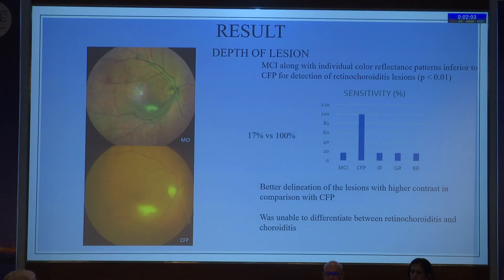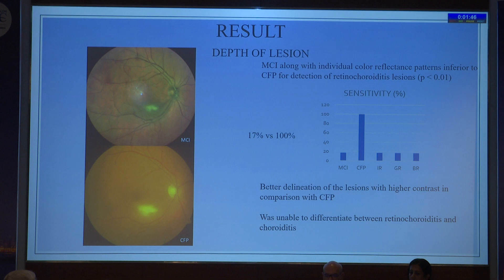With regard to depth of lesion, for identification of retinochoroiditis, multicolor with a sensitivity of 17% was inferior to color fundus photography with a sensitivity of 100%. As seen in the multi-color image on top, the active retinochoroiditis lesion appears green in color with higher contrast in comparison to the yellow lesion on the fundus photo. However, although it was much better defined, it was difficult to differentiate it between retinochoroiditis and choroiditis.